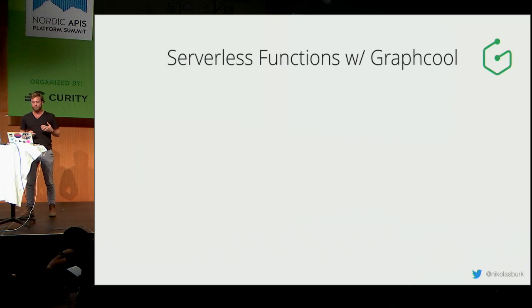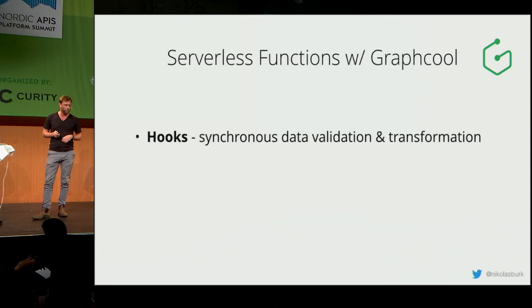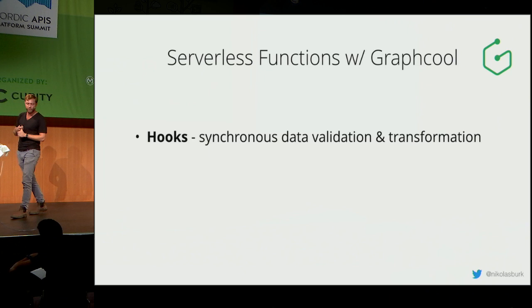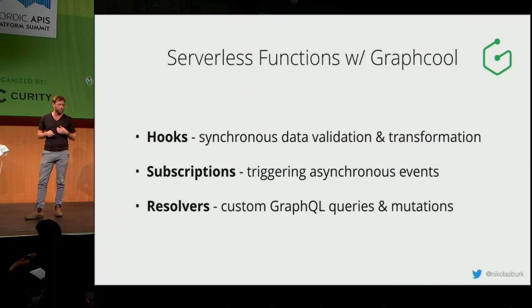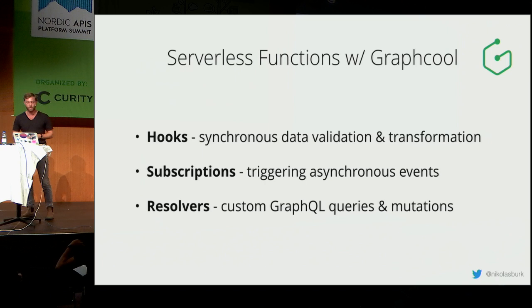This global type system restores the advantage lost when moving from monolith to microservices, giving all communicating components in the system type safety. The framework provides three kinds of functions: hooks for synchronous validation and transformation of data, subscriptions for triggering asynchronous events, and resolver functions to extend the CRUD GraphQL API with custom queries and mutations.